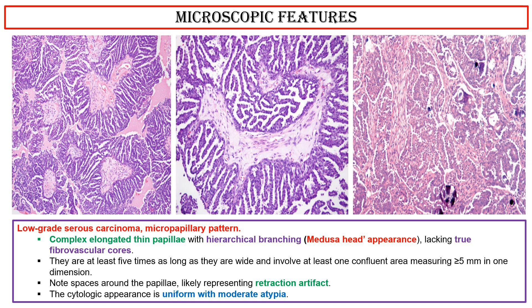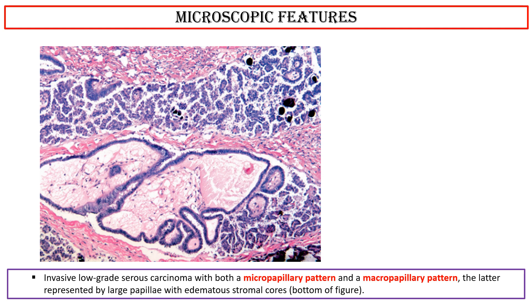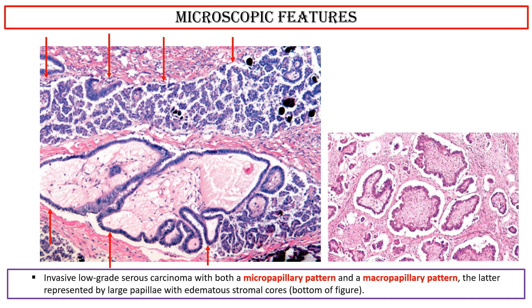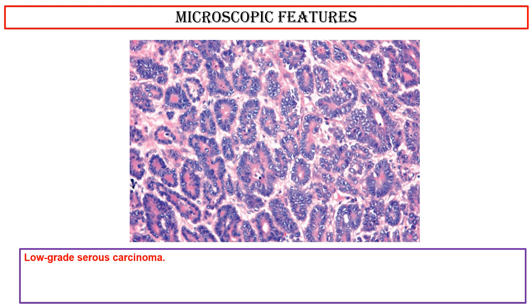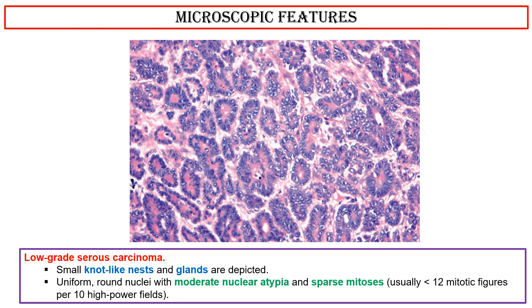The cytologic appearance is uniform with moderate atypia. This photo shows an invasive low-grade serous carcinoma with both a micropapillary pattern and a macropapillary pattern, the latter represented by large papillae with edematous stromal cores. This photo shows small knot-like nests and glands, with uniform round nuclei, moderate nuclear atypia, and sparse mitosis, usually less than 12 mitotic figures per 10 high-power fields.